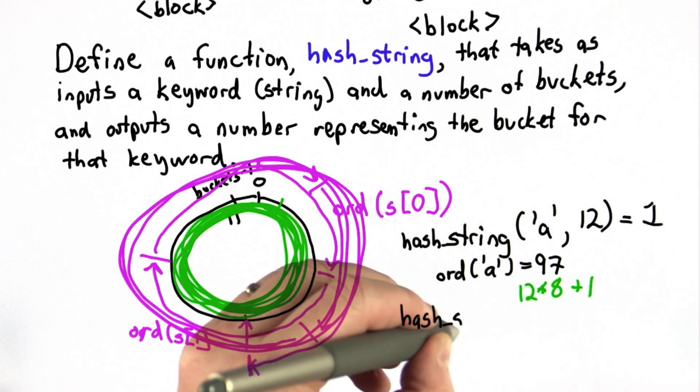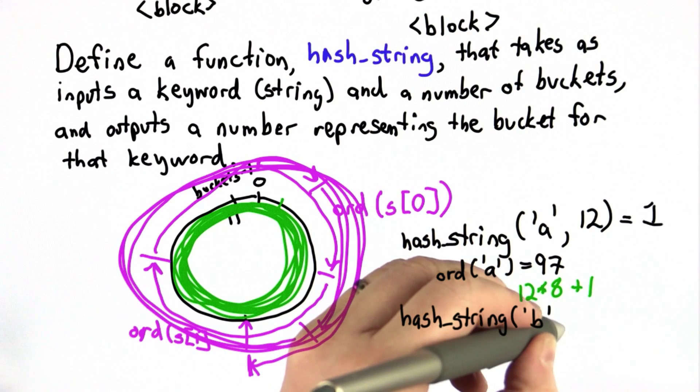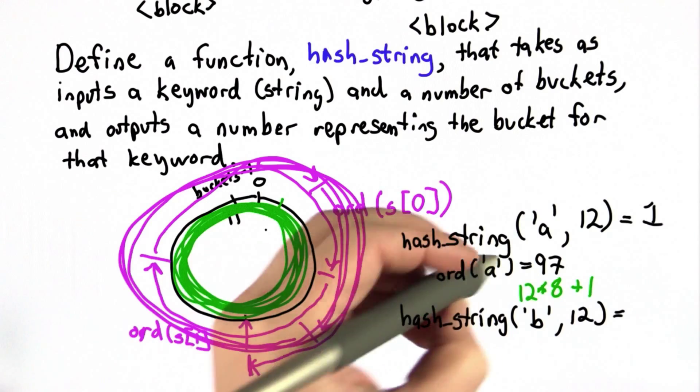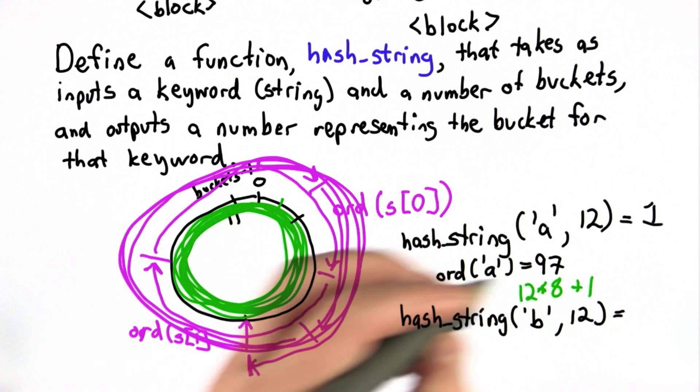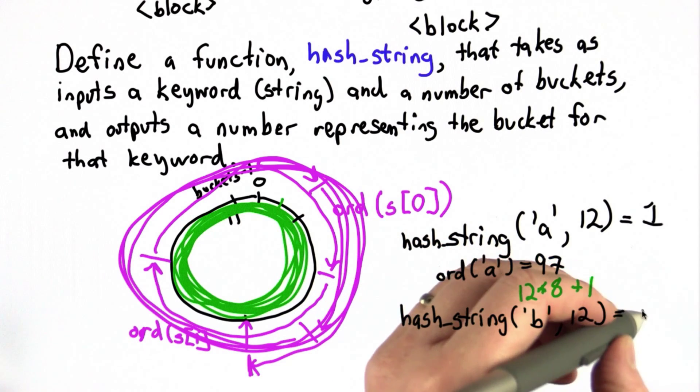As another example, if we tried hash_string where the string is the single letter B, also with 12 buckets, well that's going to also go around the circle 8 times because the ord of B is 98, but it's going to end up in bucket 2, since that's 96 plus 2, which will end up in bucket 2.